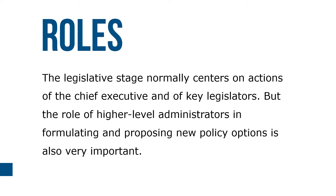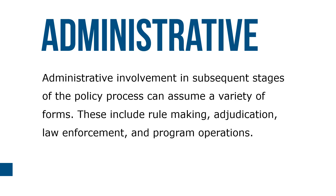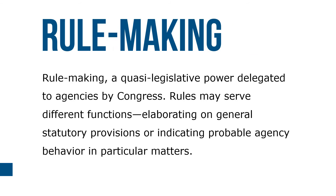The legislative stage normally centers on actions of the chief executive and key legislators, but the role of higher-level administrators in formulating and proposing new policy options is also very important. Administrative involvement in subsequent stages of the policy process can assume a variety of forms. These include rulemaking, adjudication, law enforcement, and program operation. Rulemaking is a quasi-legislative power delegated to agencies by Congress. Rules may serve different functions — elaborating on general statutory provisions or indicating probable agency behavior in particular matters.